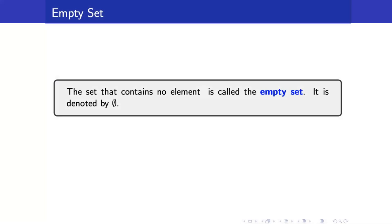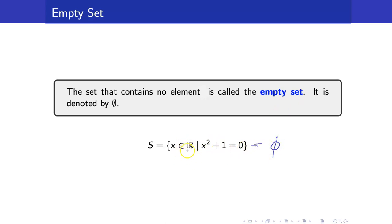Next, let us recall the empty set. The set that contains no elements is called the empty set and it is denoted by the empty set symbol. For example, the set of all real numbers which are solutions to x² + 1 = 0 is the empty set, because there are no real numbers which satisfy x² + 1 = 0.